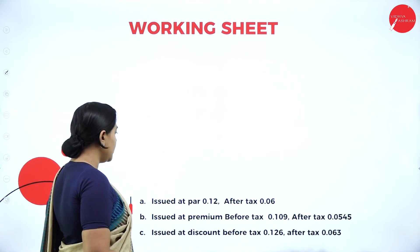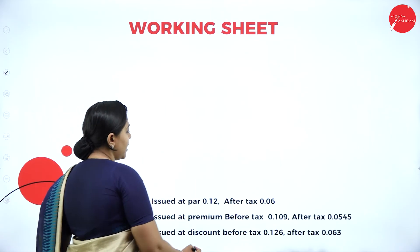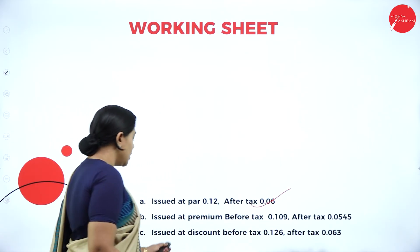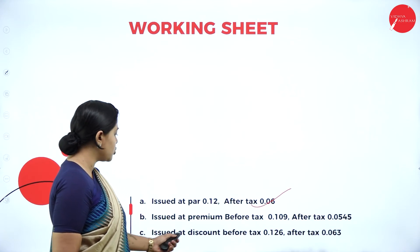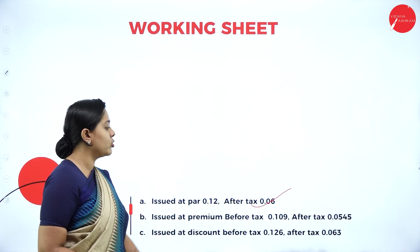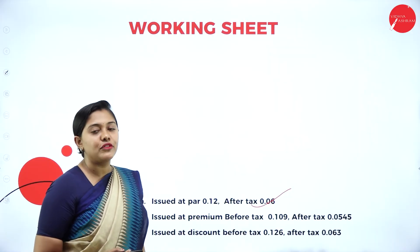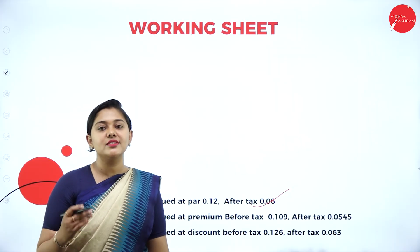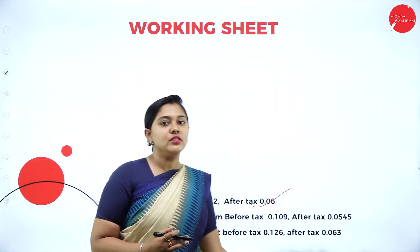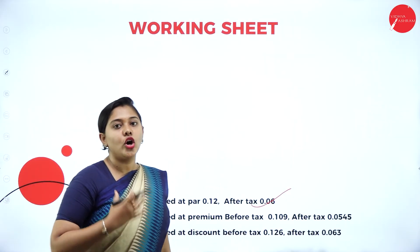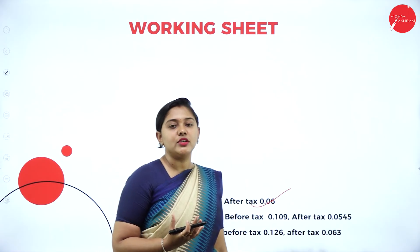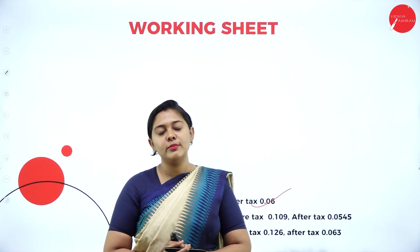So the answers for Problem 4 issued at par are 12% and 6%. For issued at a premium — before tax and after tax — and issued at a discount — before tax and after tax — you all have to do it as homework. Check out the answers; it is very easy and simple to understand with practice.